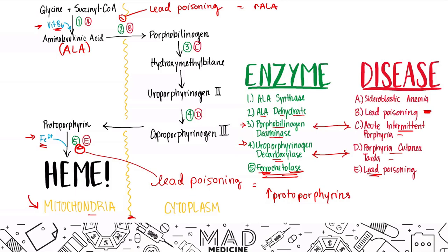To recap: heme is produced via the combination of iron and protoporphyrin through the use of ferrochelatase. Heme is produced mainly in the mitochondria, but the precursors for heme are also processed in the cytoplasm. If you block any of these enzymes, you get the diseases we discussed. Remember that vitamin B6 and iron are very important for heme production.